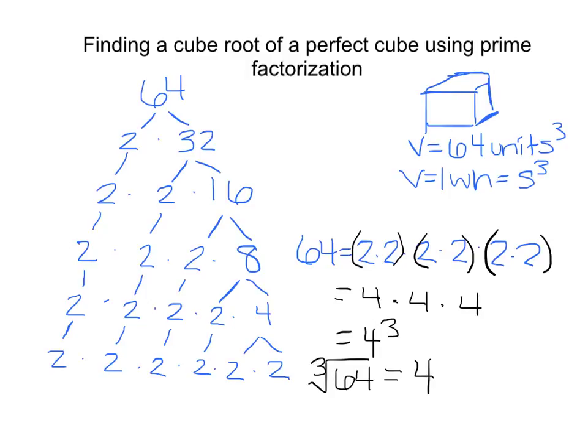So the cube root of 64 equals 4, because 4 times 4 times 4 equals 64. Going back to our cube, each of the side lengths would be 4.